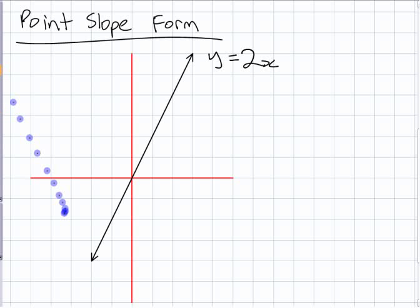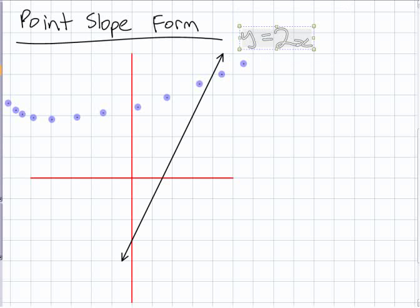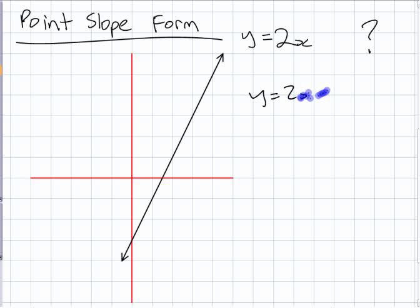If we took that line and moved it somewhere else, and I asked you what the equation was. So let's say we moved it over 2 there. What is that equation now? It's not y equals 2x anymore. What is it? It's y equals 2x minus 3, right? How can you tell that?